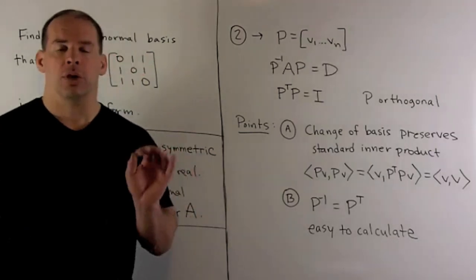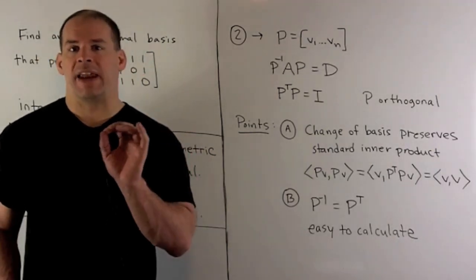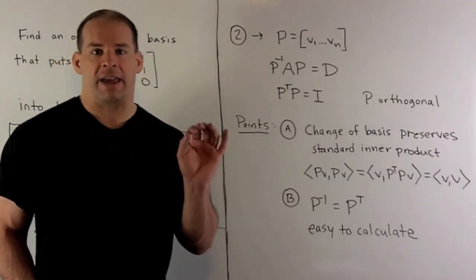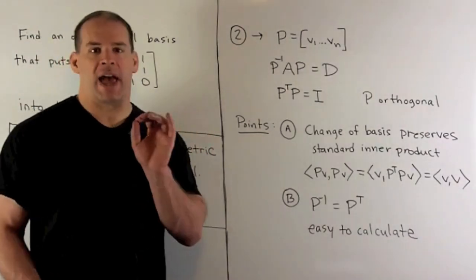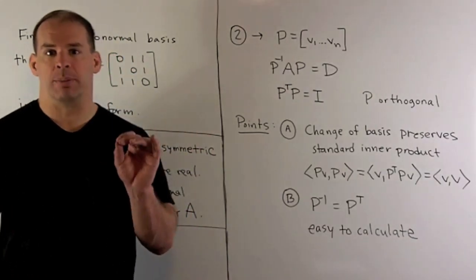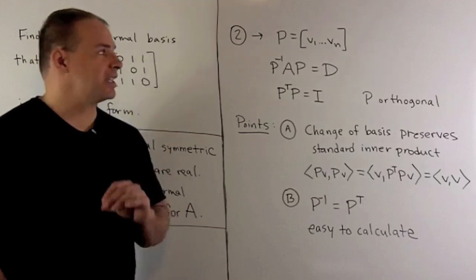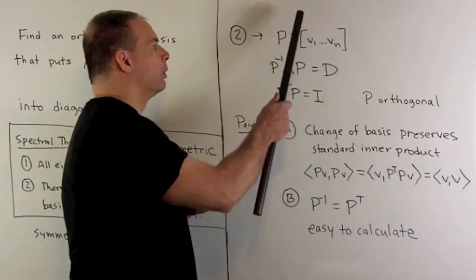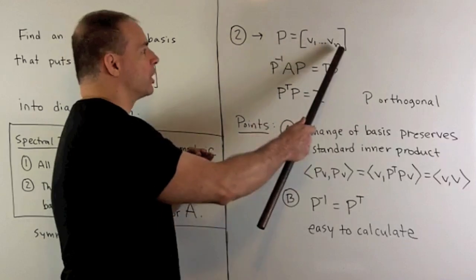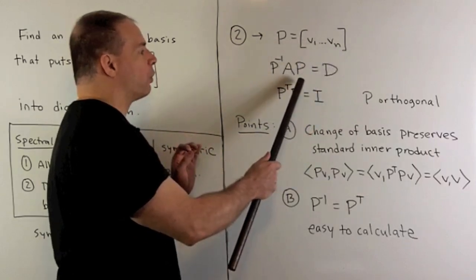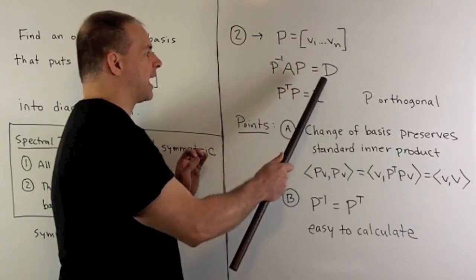To say that I have an orthonormal basis of eigenvectors just means if I take those eigenvectors and form the basis matrix, we're going to take our vectors and put them in as the columns of a matrix. Then this matrix will put A into diagonal form, so D will be diagonal.